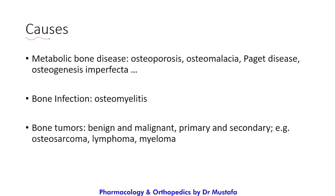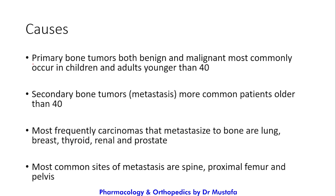The most common cause of all pathological fractures is osteoporosis. Other metabolic bone diseases that cause fractures include osteomalacia, Paget's disease, and osteogenesis imperfecta. Bone infection in the form of osteomyelitis can also lead to pathological fractures. Bone tumors - both benign and malignant, primary and secondary - such as osteosarcoma, lymphoma, and myeloma are additional causes. Primary bone tumors most commonly occur in children and adults younger than 40, while secondary tumors from metastasis are more common in patients older than 40.